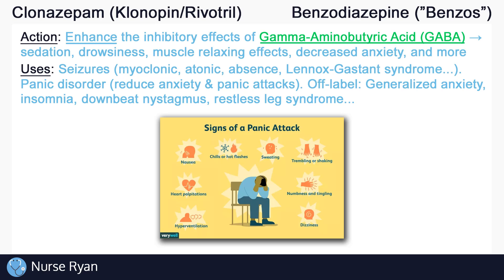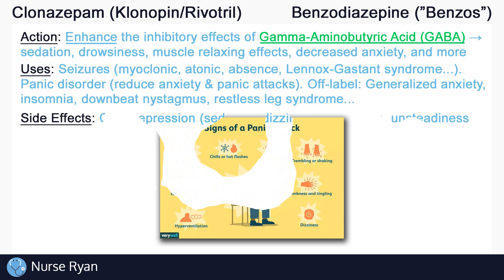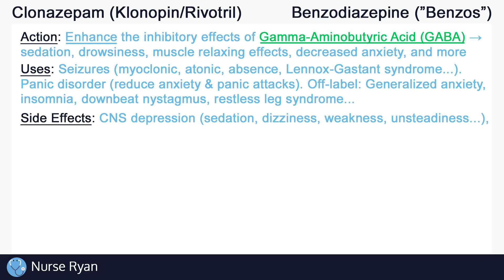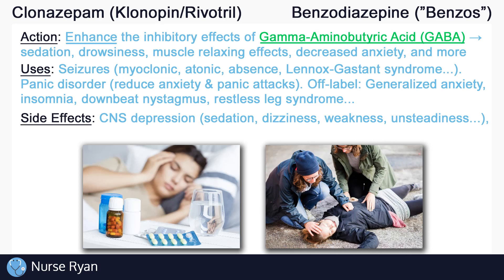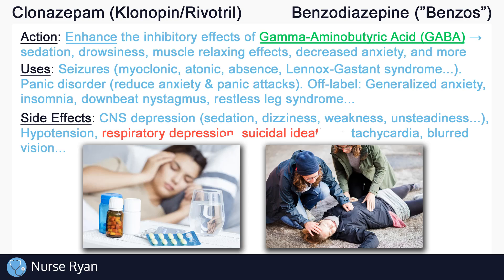Many of clonazepam's side effects relate to how benzos work, which is essentially as a central nervous system depressant. CNS depression may present as sedation, dizziness, weakness, unsteadiness, and more. Severe CNS depression can eventually lead to loss of consciousness, coma, and even death. There are many other possible side effects, just some of which include hypotension, possibly due to decreased anxiety, respiratory depression due to the CNS depression, suicidal ideations which are very important to look out for, tachycardia, blurred vision, and many more.